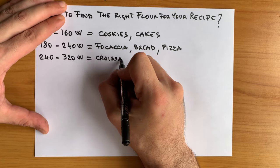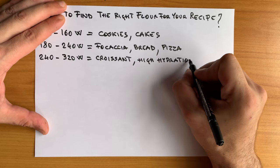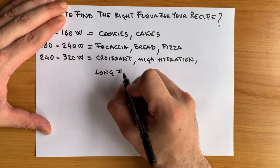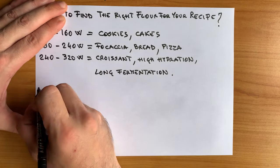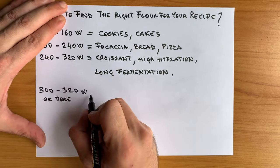240 to 320 for croissant, high hydration or long fermentation dough. 300 to 320 or more for brioche bread, panettone or dough with a lot of butter.